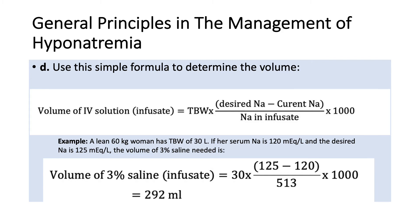For example: a 60 kg woman whose lean body weight is 60 kg has a total body water of approximately 30 liters (60 × 0.5). Serum sodium is 120 and we want to raise it to 125 — a rise of 5. How much 3% saline do we need? Total body water is 30; 125 minus 120 is 5; divided by 513 (the sodium content of 3% saline); multiplied by 1,000 — the volume is approximately 292 ml, so roughly 300 ml. We give that over 20 hours at 15 ml/hour, or over 15 hours at 20 ml/hour.